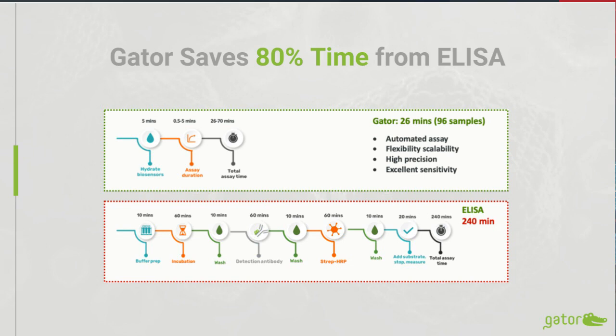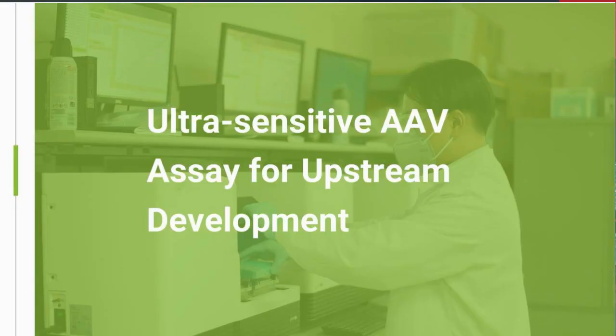There could be other applications of the AAVX probe beyond upstream and downstream quantitation. For example, the probe can be configured to possibly measure neutralizing antibody in clinical samples.